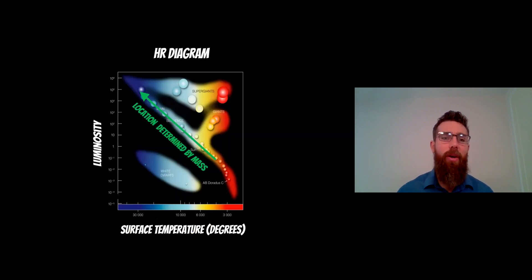Now if we go to the HR diagram, which is a diagram of stars plotted with their surface temperature and the luminosity, we get a nice diagonal down the middle which is the main sequence. This is where most of the stars are going to sit when they're zero age and on the main sequence. And depending on where they sit on that is related to their mass.